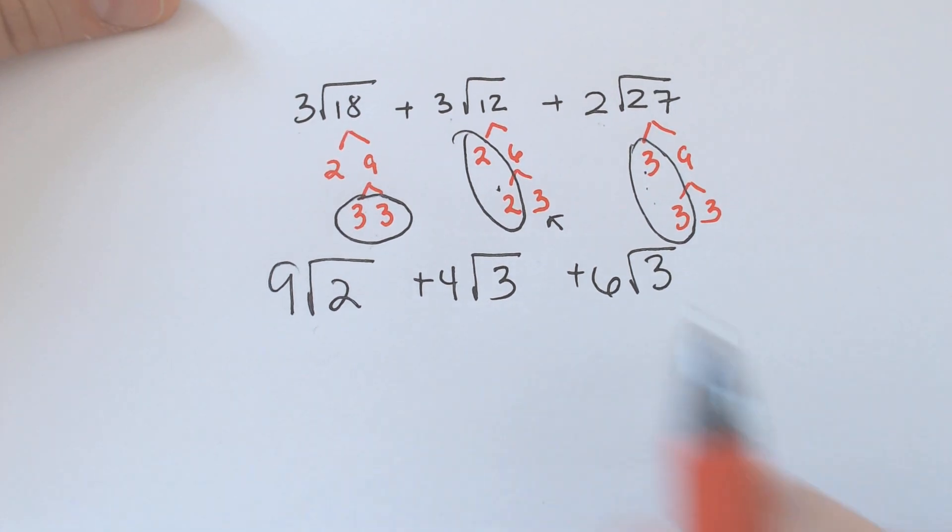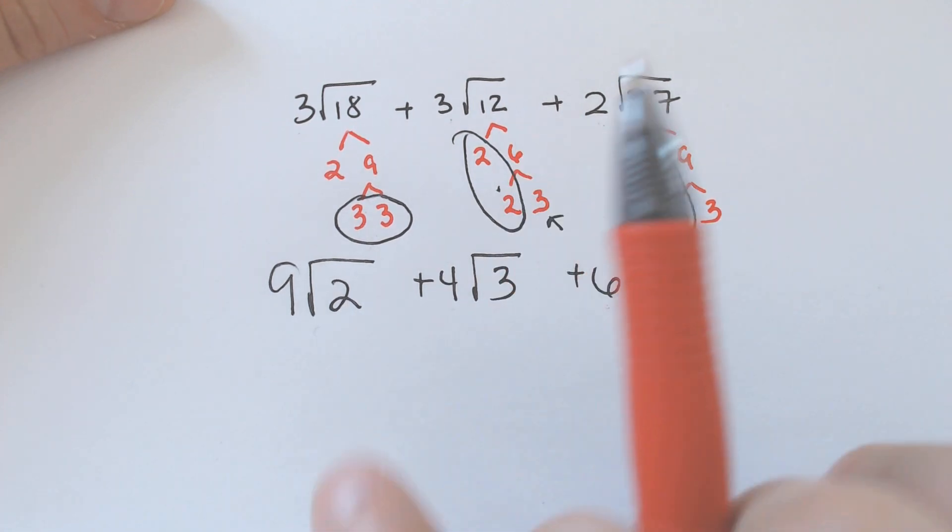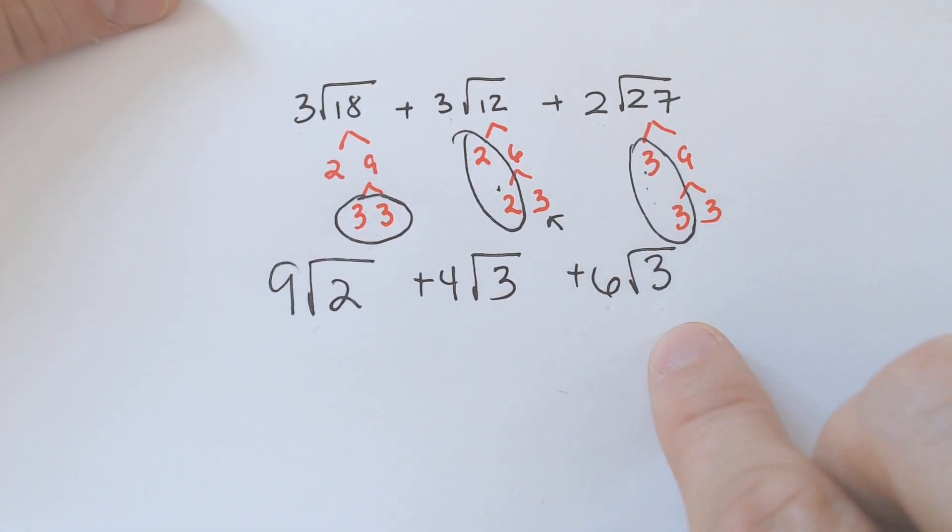Now, on this problem, we have a square root of 3 and a square root of 3. We can add these together. This square root of 2 is not a square root of 3, you may notice. You can't do anything with it. It can't combine. It is not considered a like term.